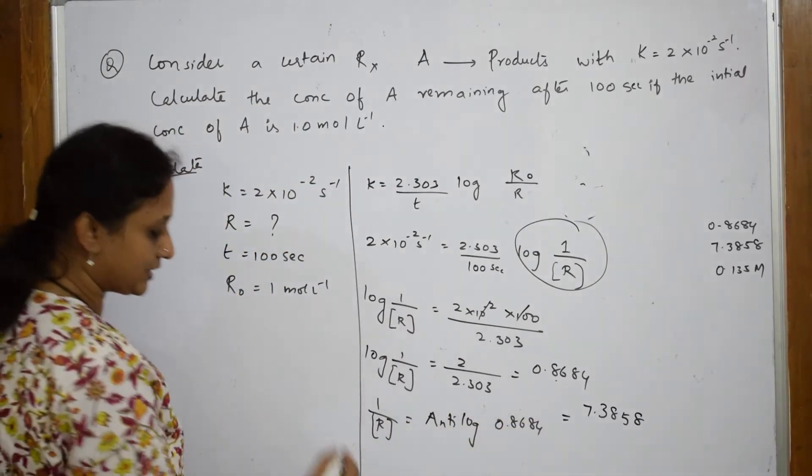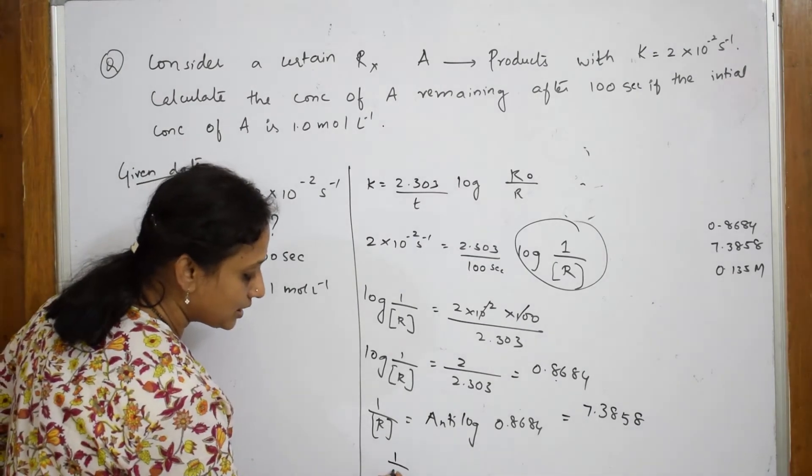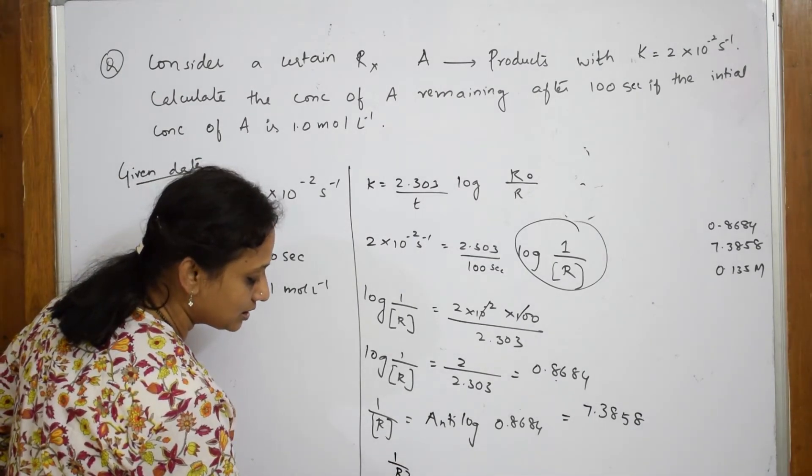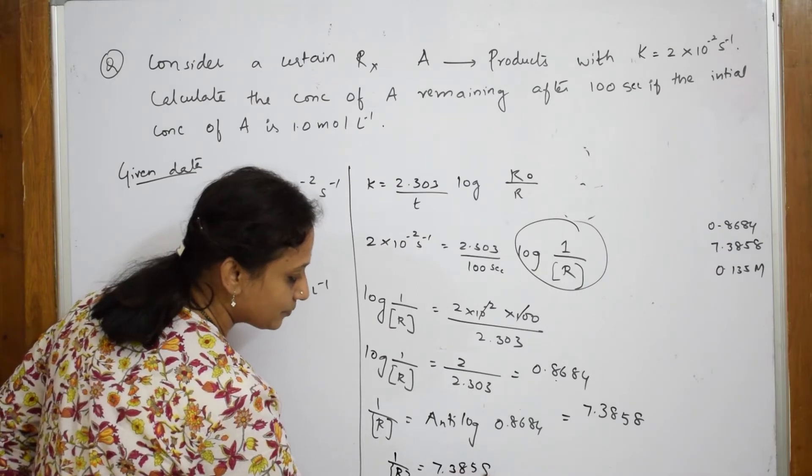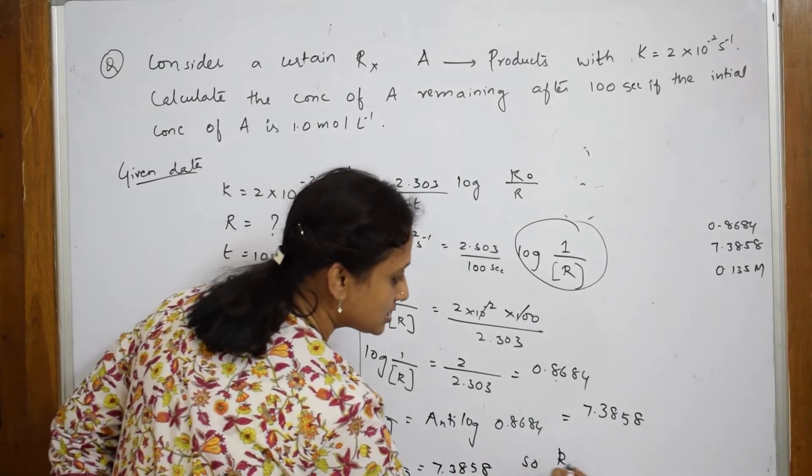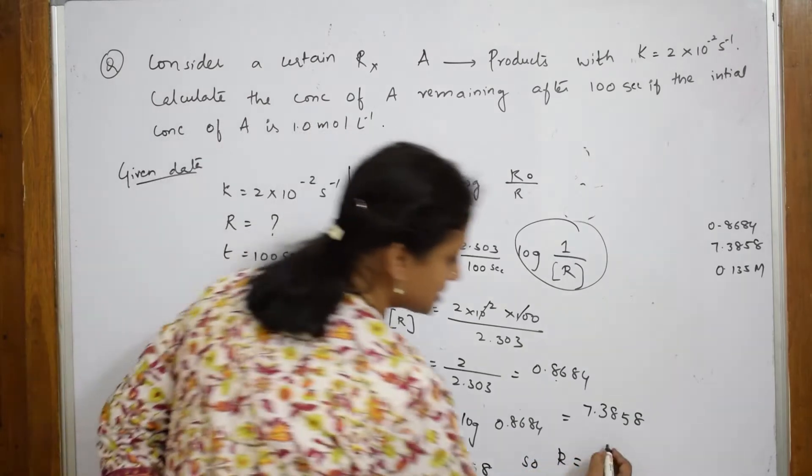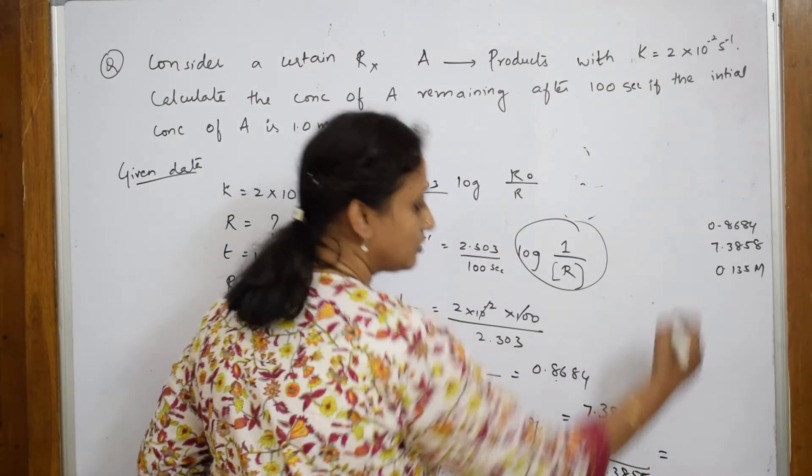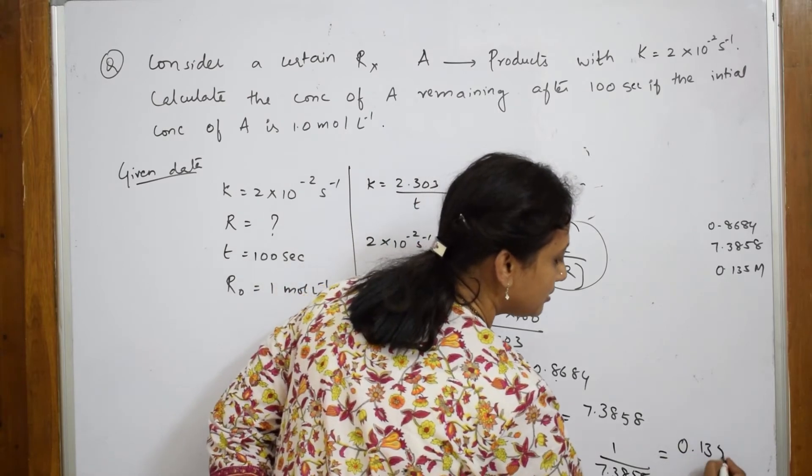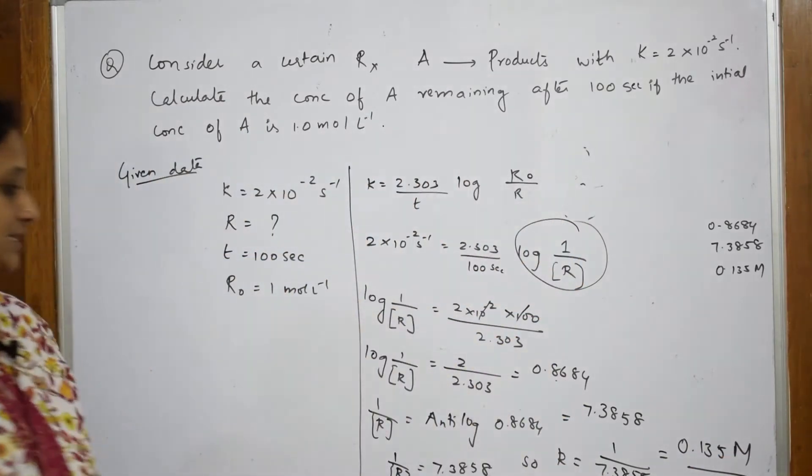Still I am not done, I have to find R. 1 by R is 7.3858. So R is equal to 1 by 7.3858, I get an answer of 0.135 molar.